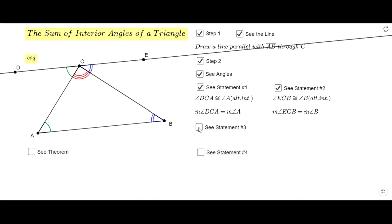Now I'm gonna click on statement three. What you see here is the fact that if we add these three angles, the green one, the red one, and the blue one, we get this straight angle DCE, which is nothing else than 180 degrees, and I have a statement for...